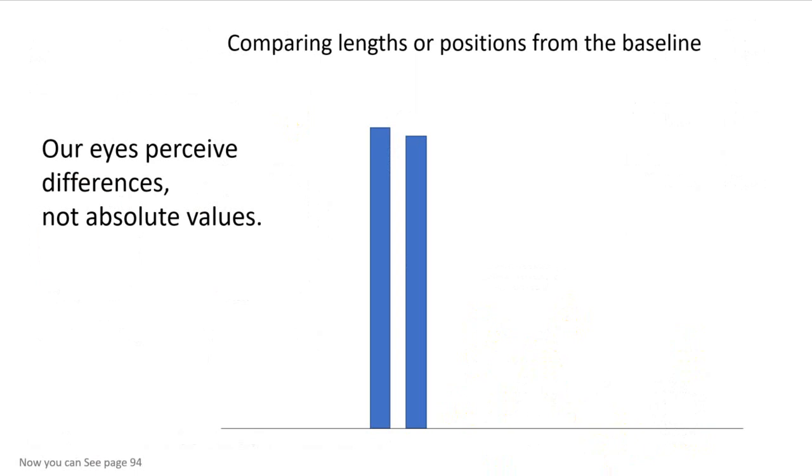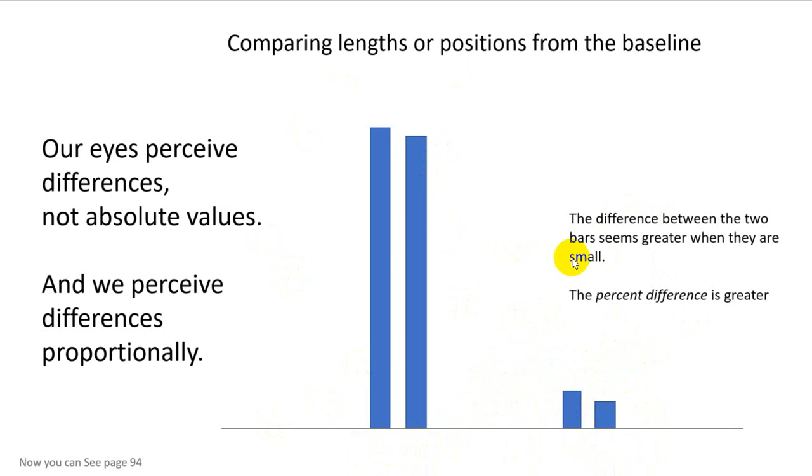Okay. Again, our eyes more easily perceive differences than absolute values. So, even though we will talk in a minute about the effectiveness rankings and how position along a common scale is a great way to pull more exact values from a graphic. It is human nature to perceive differences proportionally. So, if we have these two long bars, the difference between them seems smaller than the difference between these two bars because we're looking at the percent difference of the total area, the total blue area. And the percent difference here is much greater. This is why bar charts have to start at zero because this is starting to lie because we've truncated it. Yeah, the difference between the two bars seems greater when they're smaller like this.